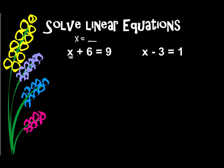So when I look here, I don't have x by itself on this side of the equal sign — I have a plus 6. So what I do is I do the opposite of what I see. If I'm adding 6, I'm going to subtract 6.